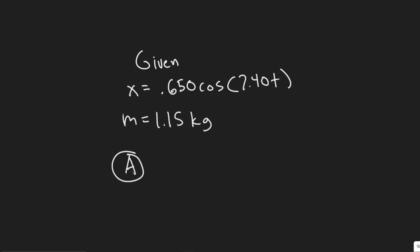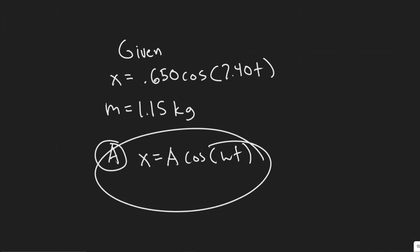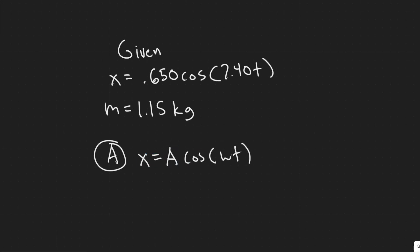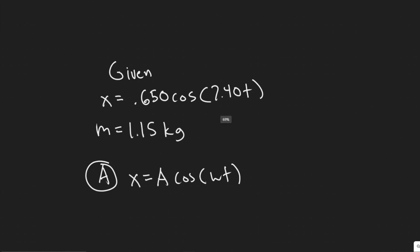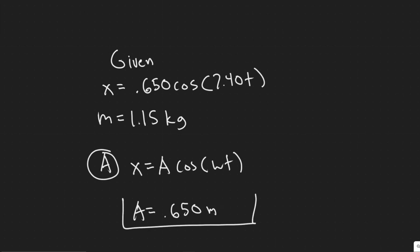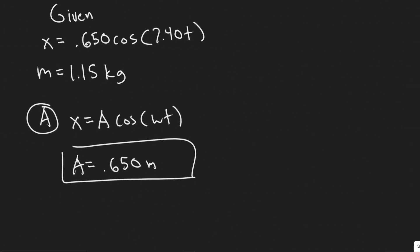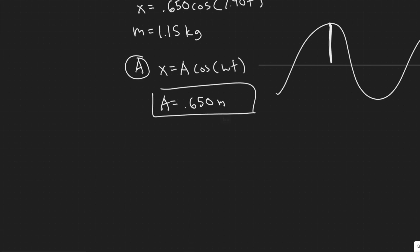Let's start with part A, finding the amplitude. The standard SHM formula is x equals A cosine of omega·t. So comparing with our equation x equals 0.650 cosine of 7.4t, A corresponds to 0.650 and omega corresponds to 7.4. The amplitude is simply 0.650 meters — that's the maximum displacement distance.